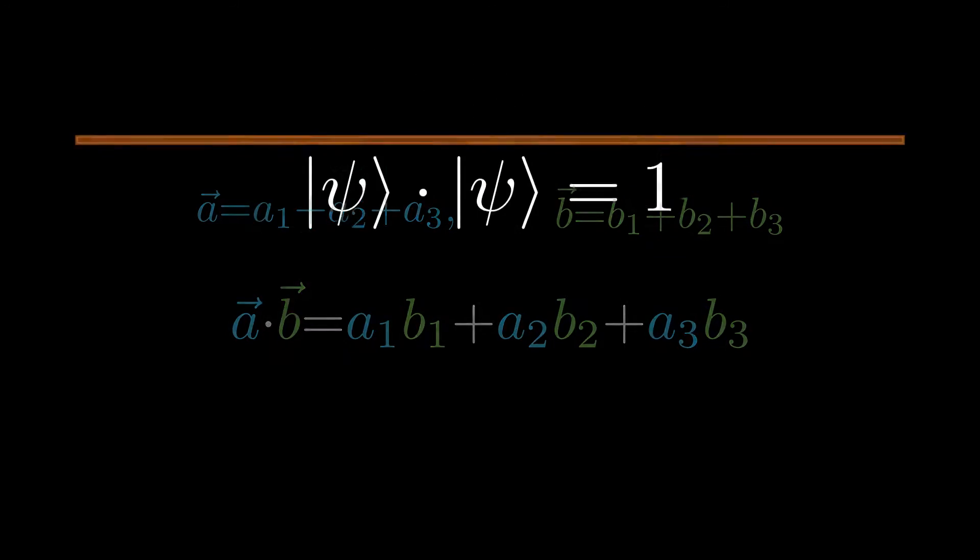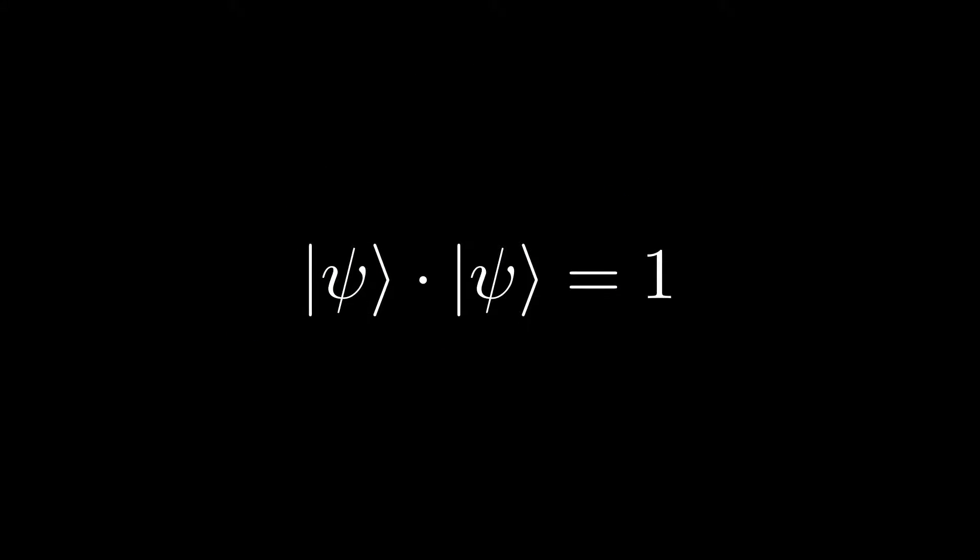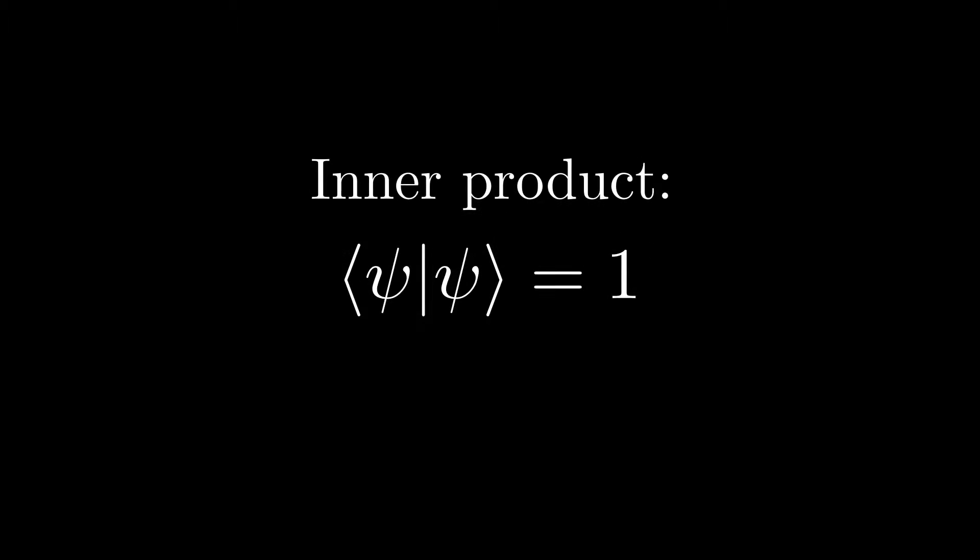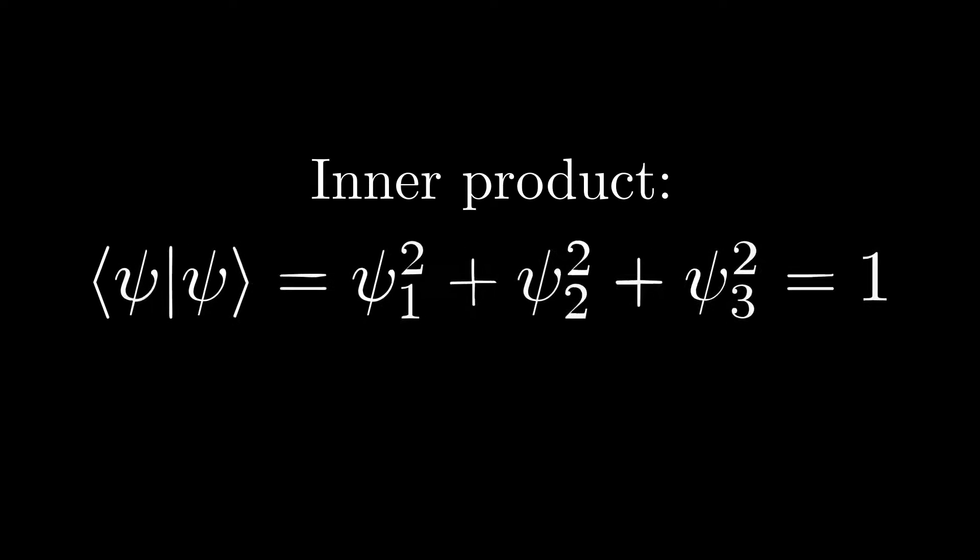Here we just write a dot product not with a dot, but with a combination of a bra and a ket vector. You can also call this the inner product of these vectors. The normalization condition of psi may then be written like this.